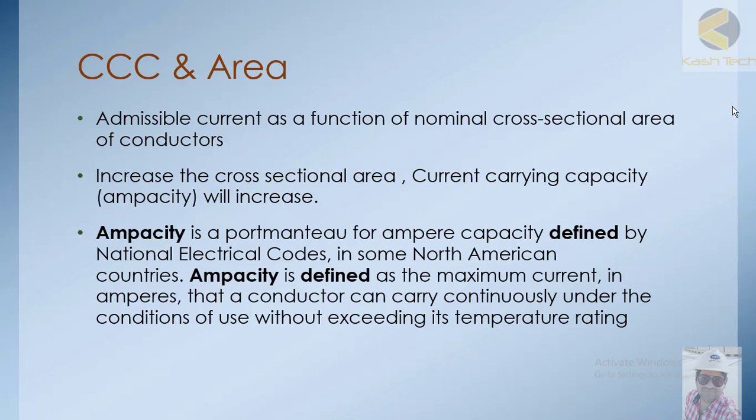In this session we will discuss cross-section area and current carrying capacity — basically admissible current as a function of nominal cross-section area of a conductor. As a thumb rule, if the conductor cross-section area is increasing, the resistance of the conductor is decreasing, there will be less losses, less heat effect, and the current carrying capacity — called ampacity — will increase.